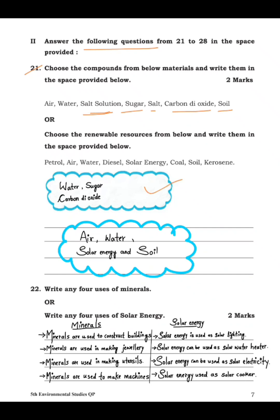You will get an option — either you can go for this one or for the other one. If you answer either one, you will get full marks. The second option is: choose the renewable resources from the below and write them in the space provided — petrol, air, water, diesel, solar energy, coal, soil, and kerosene.